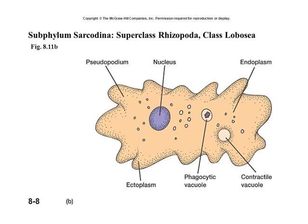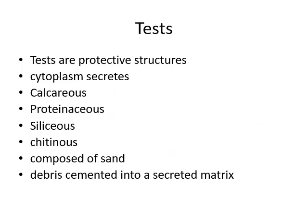Here is an amoeba diagram showing pseudopodia, nucleus, endoplasm, ectoplasm, phagocytic vacuoles, and contractile vacuoles.